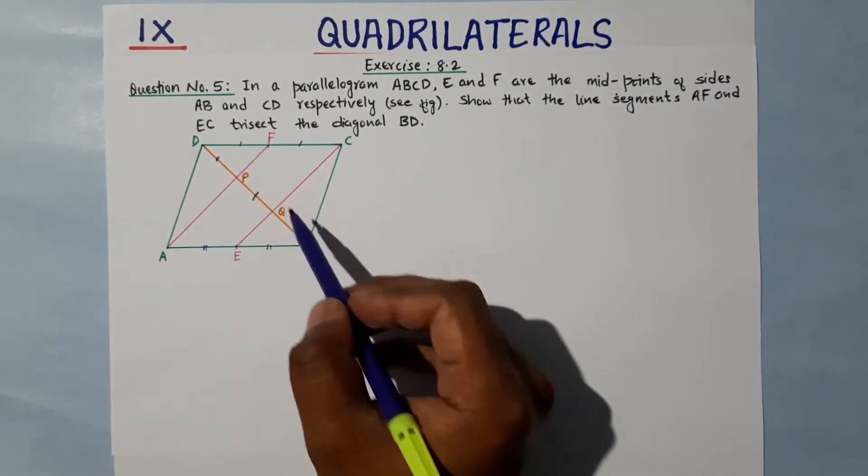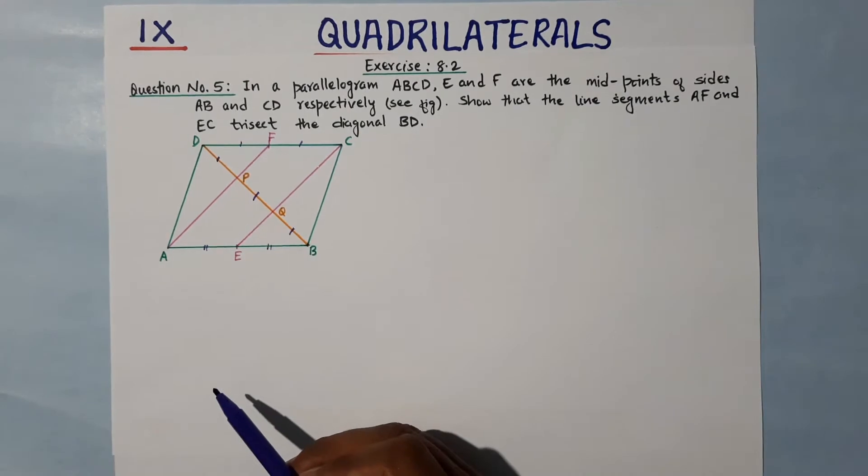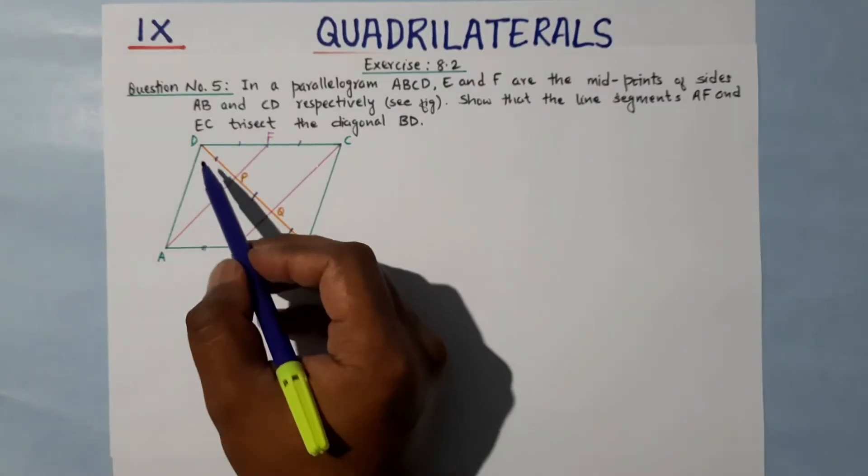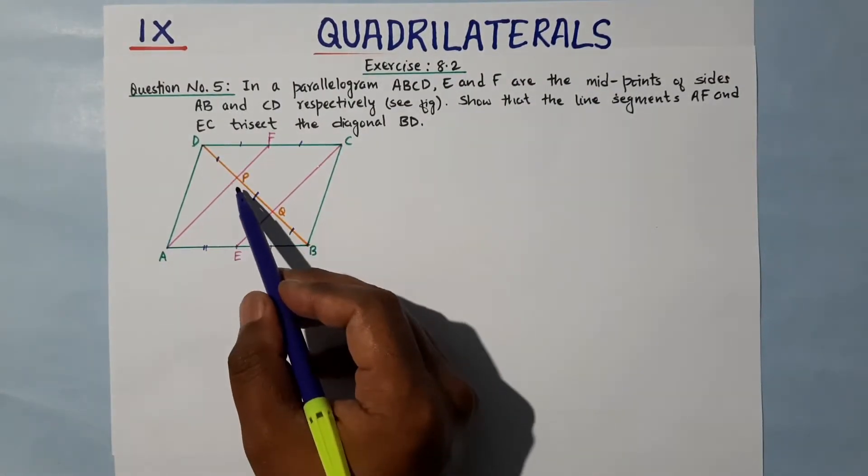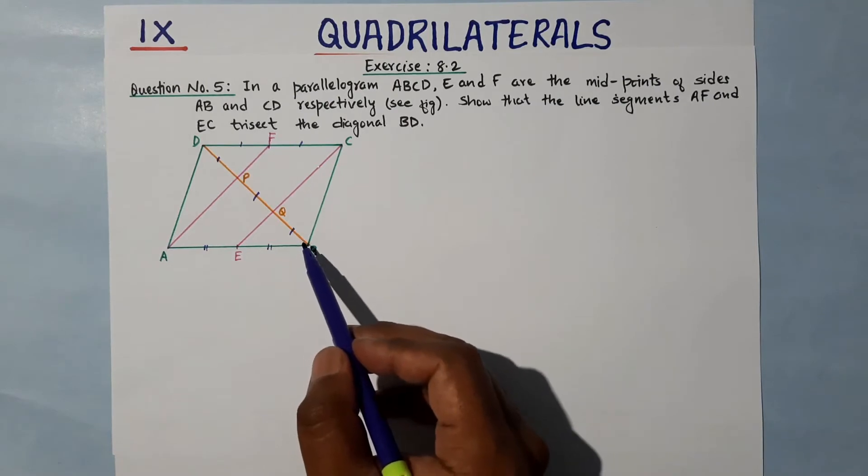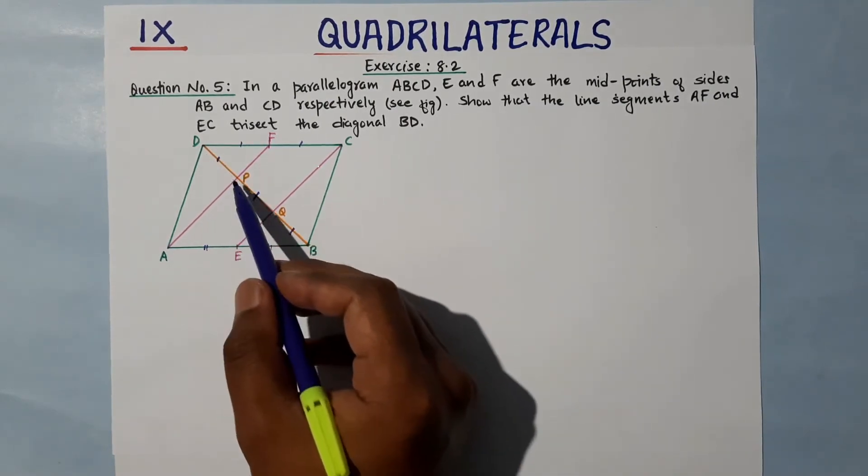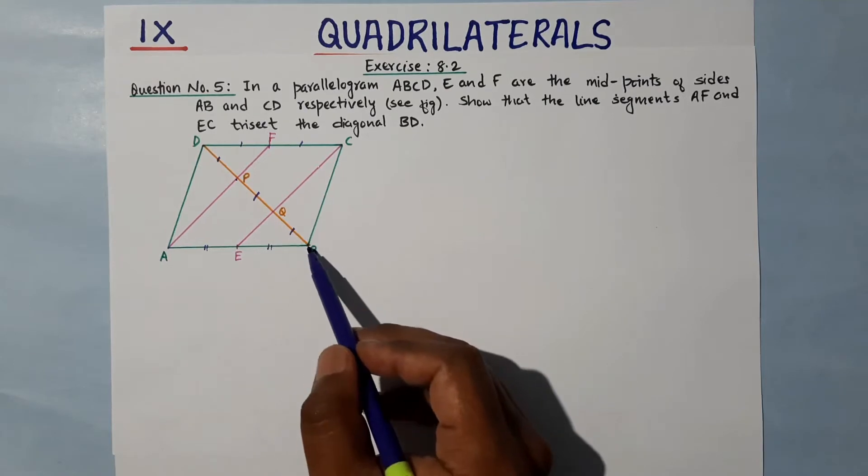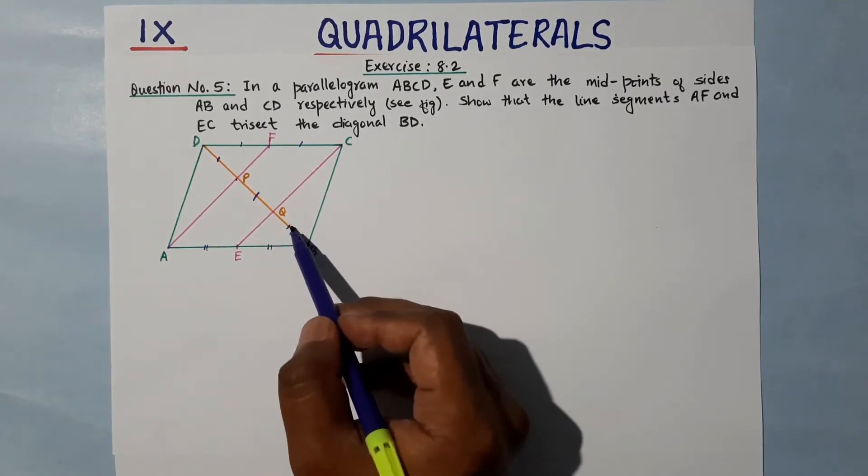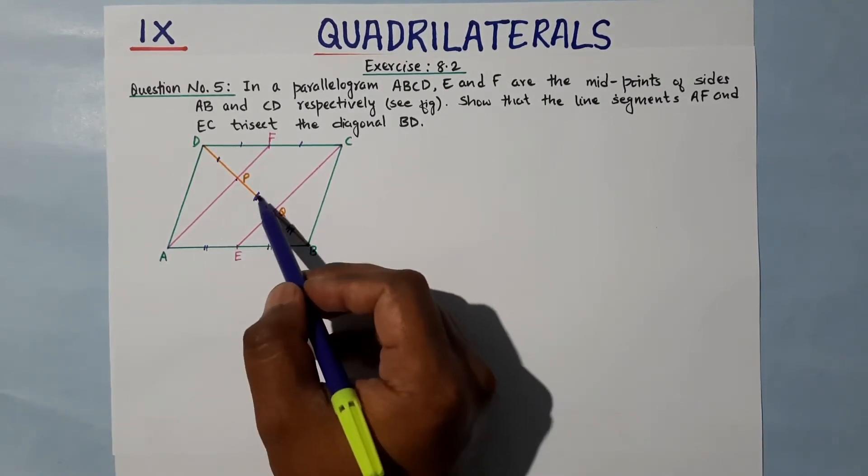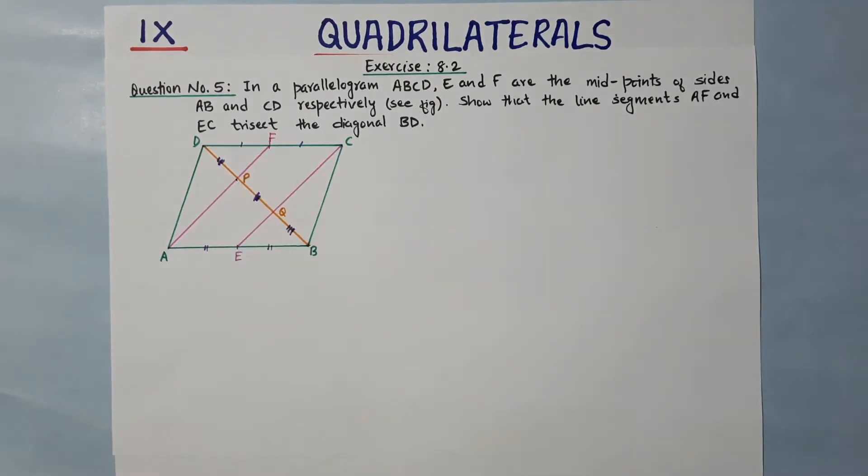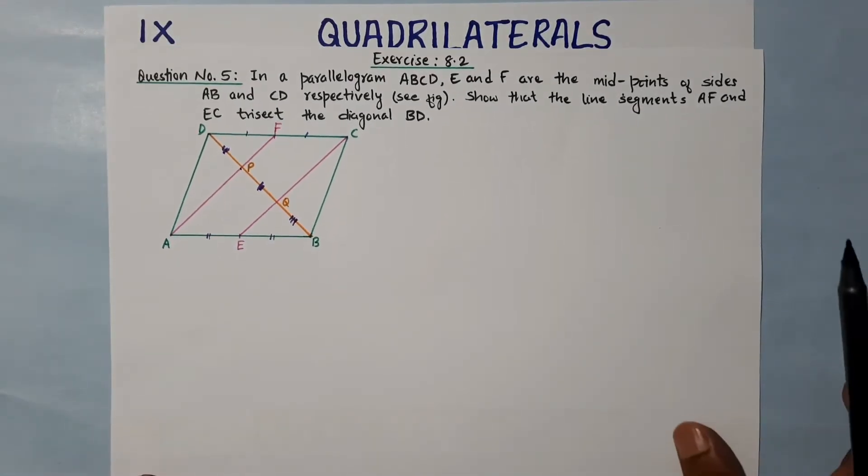DP, PQ and BQ - trisect means DP is equal to PQ is equal to BQ. These three are equal, and we have to show this. Okay, so this is our question. Now let's start the solution.